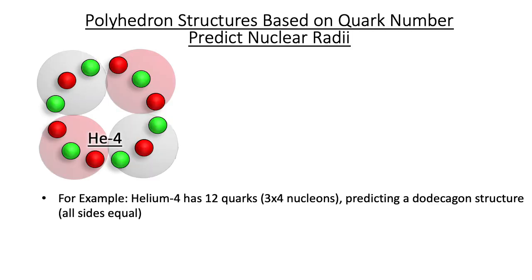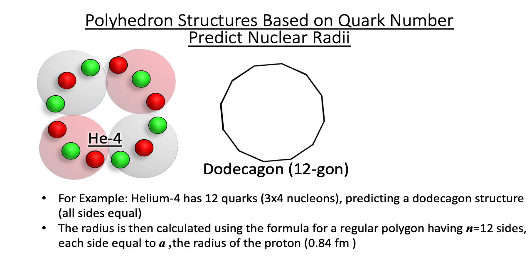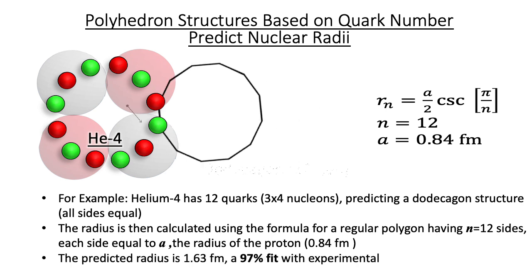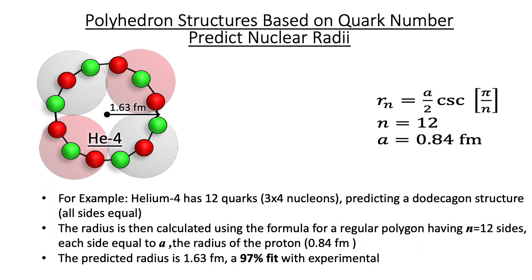For example, helium-4 has 12 quarks, predicting a dodecagon structure. The radius is then calculated using the formula for a regular polygon having n equal to 12 sides, each side equal to a — the radius of the proton. The predicted radius is 1.63 femtometers, a 97% fit with experimental.